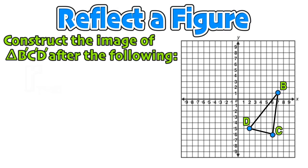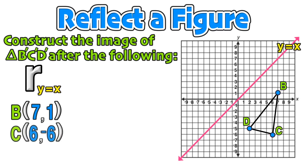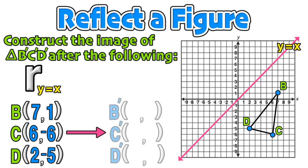Finally, for our last example, we are going to reflect a figure — specifically, triangle BCD across the line y equals x. We start by writing down the coordinates of the vertices of triangle BCD, then count on a horizontal path how many units each point is away from the line of symmetry: B is 6 units away, D is 7 units away, and C is 12 units away. Since y equals x is a diagonal line, when we count on the other side of the line of symmetry we move vertically. By matching the same number of units for each corresponding point, we can find the coordinates of B', C', and D'.